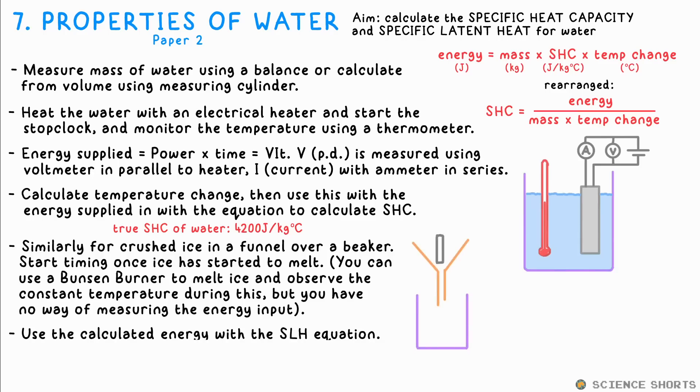For SLH, we put ice in a funnel with the electric heater, with a beaker underneath to catch the water produced. You only start timing once the first bit of water drips down, as we don't want to include the energy needed to bring the temperature up to the melting point of zero degrees. Stop timing once there is no more ice, and similar to before, we calculate the energy input using V times I times T divided by the mass of the ice, and you have your SLH of fusion of water, which hopefully should be close to 334,000 joules per kilogram.